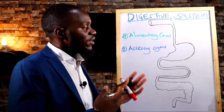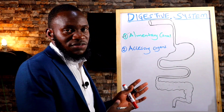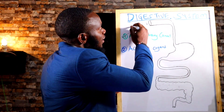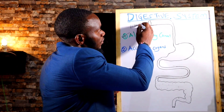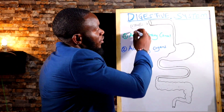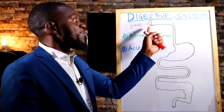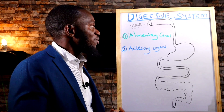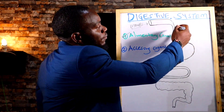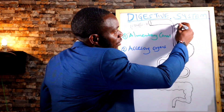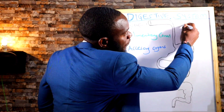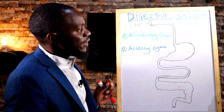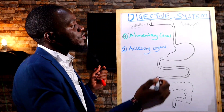Number one, we have the mouth. The entry of food into the alimentary canal is through the mouth, which is the first part of the digestive system, followed by the back of the neck which is the pharynx, then followed by the esophagus.